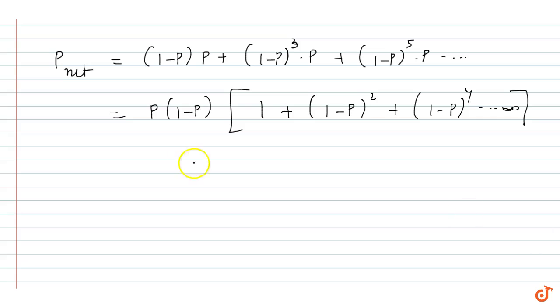Then here is infinite series GP, then p into 1 minus p. Then infinite GP, then a upon 1 minus r, then 1 upon 1 minus r, then r can we have 1 minus p whole square. Then 1 minus 1 plus 2p plus p square.